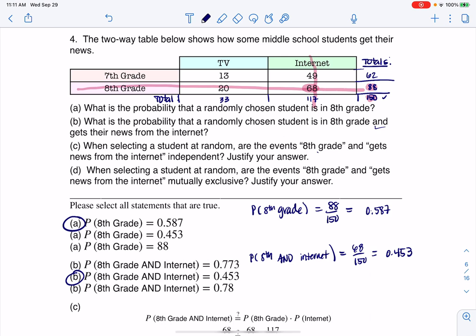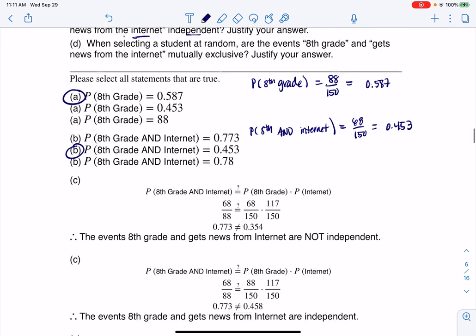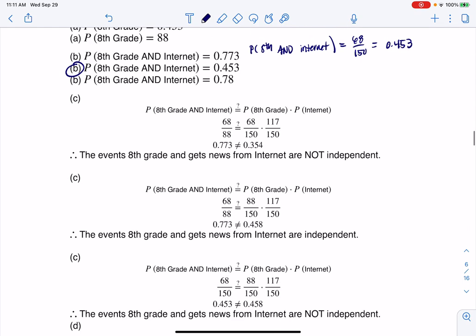When selecting a student at random, are the events 'eighth grade' and 'gets news from the internet' independent? If it's independent, I can check if the probability of A and B equals the probability of A times the probability of B, or I can check if the probability of A given B equals the probability of A. Since this is multiple answer, let me see which options they're doing. It looks like they're using a bunch of the ANDs, so we're going with this formula.